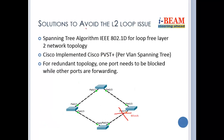Solutions to avoid the Layer 2 loop issue: the spanning tree algorithm is used as a loop prevention tool — a loop freezer that opens or blocks the loop. This is the spanning tree algorithm.